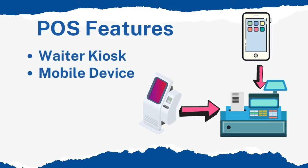For restaurants, a waiter kiosk or mobile device to punch orders, integrated with kitchen or bar monitors or order slip printers, is essential. You'll also want customer tab and bill management to merge or split bills, add or cancel orders, and table management for transferring and merging tables.